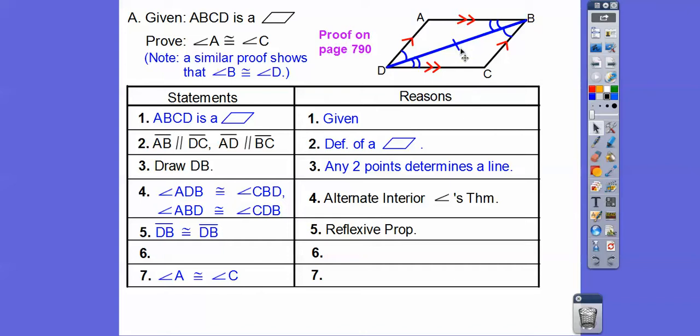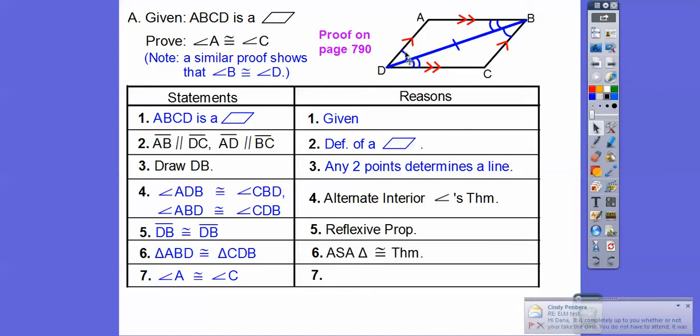We're going to say that DB is congruent to itself by the reflexive property, so we just put that in right there. Now by angle-side-angle is congruent to angle-side-angle, these triangles are congruent. So it doesn't matter the order that you put the first triangle, ABD. So we went from no arcs to two arcs to one arc, so we've got to go no arcs to two arcs to one arc right there.